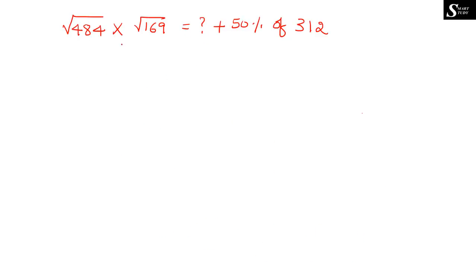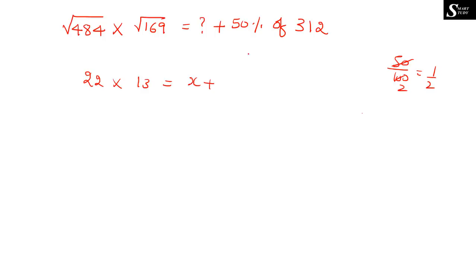The next question is: √484 × √169 = ? + 50% of 312. We know √484 = 22 and √169 = 13. So 22 × 13 = 286. Also, 50% of 312 = 1/2 × 312 = 156. So the equation becomes 286 = x + 156.